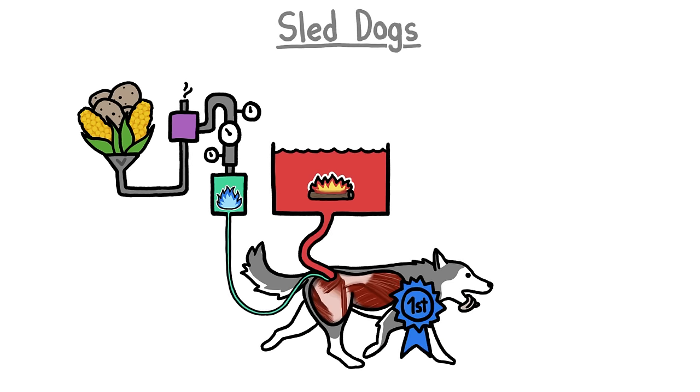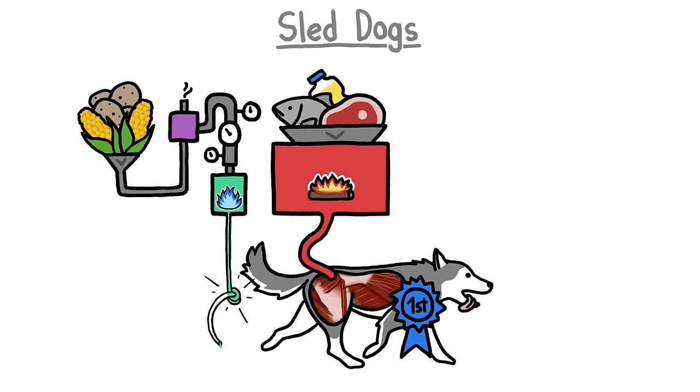Sled dogs never bonk, because early in the race, their bodies somehow shift over to burning fat and protein without needing to use any glycogen at all. And since fat and protein can be turned into energy pretty much immediately, the dogs can refuel throughout the race without ever worrying about running out of glycogen.